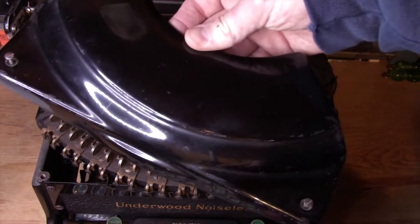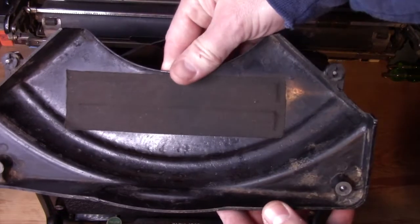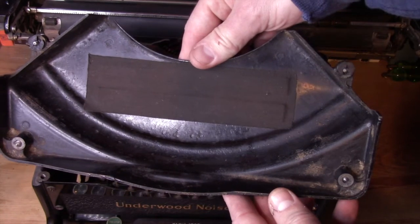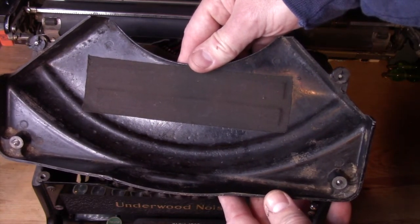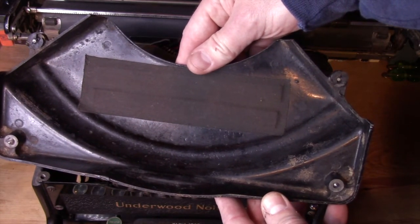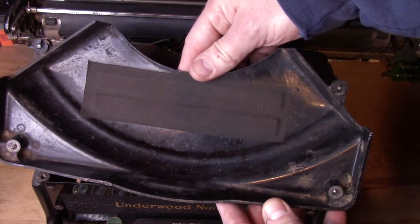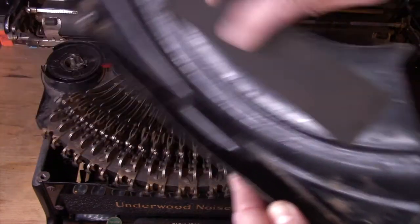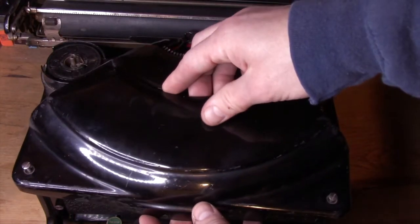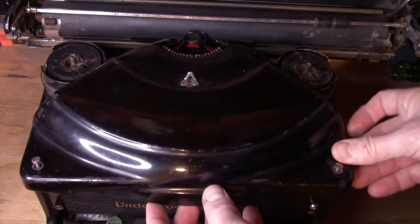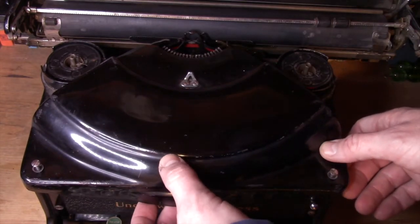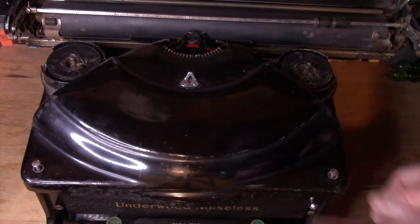We'll go ahead and put the cover back on. And in case you were wondering, this is all that makes it noiseless. So just having this cover and that one little pad there was considered state-of-the-art noiseless technology in 1935. We'll slip this cover back in place, then I'll move the typewriter to a different location, and we'll take another look around it.